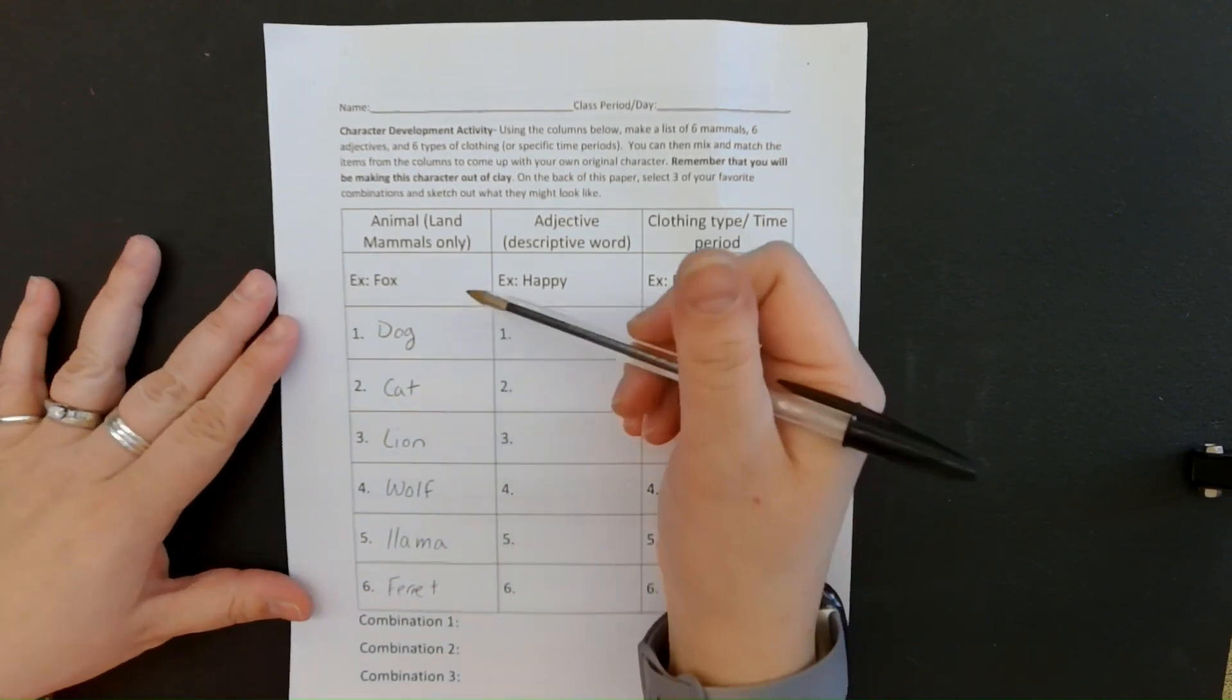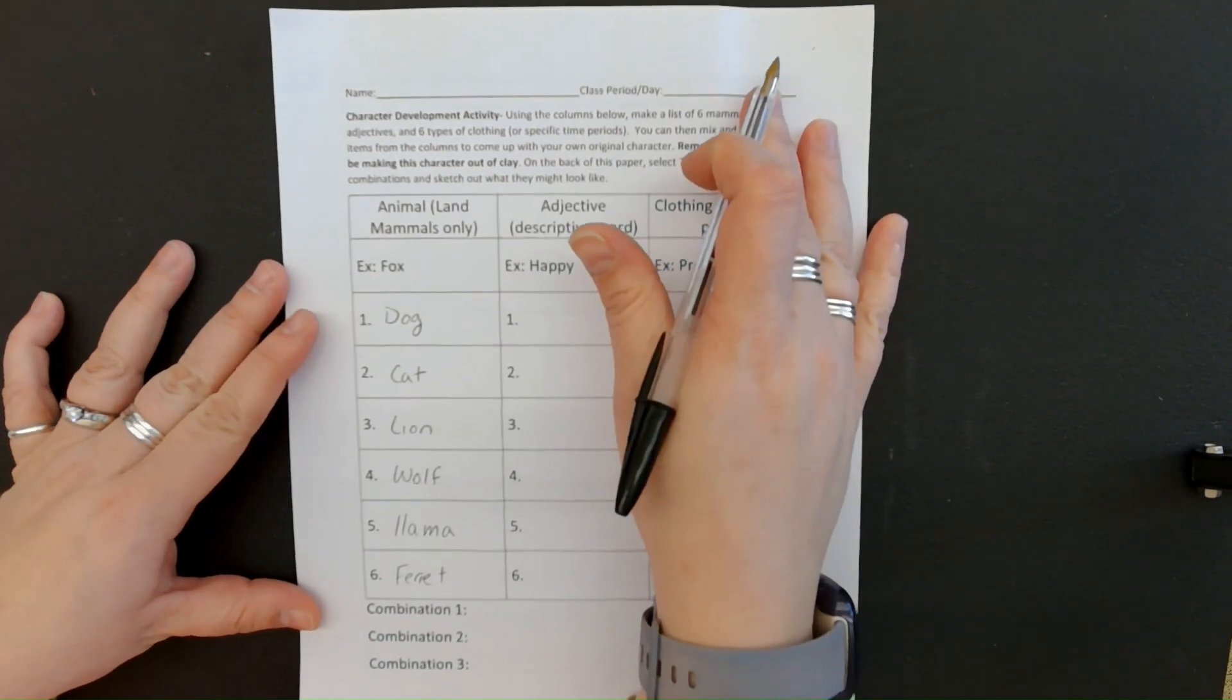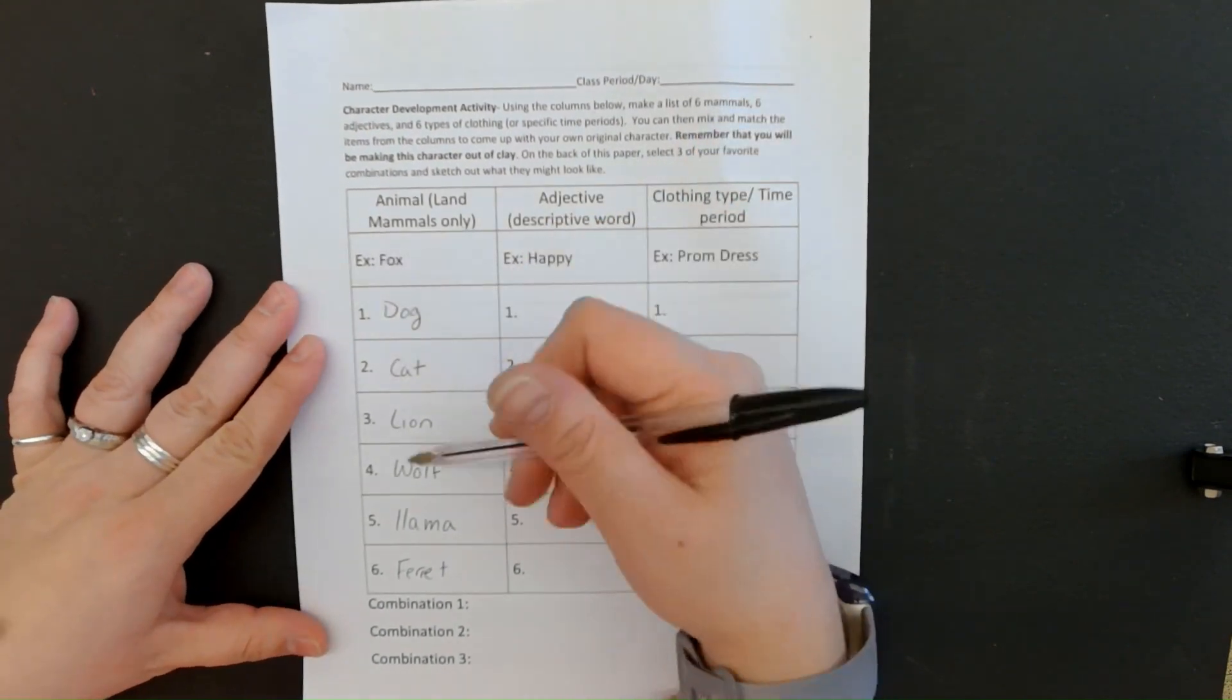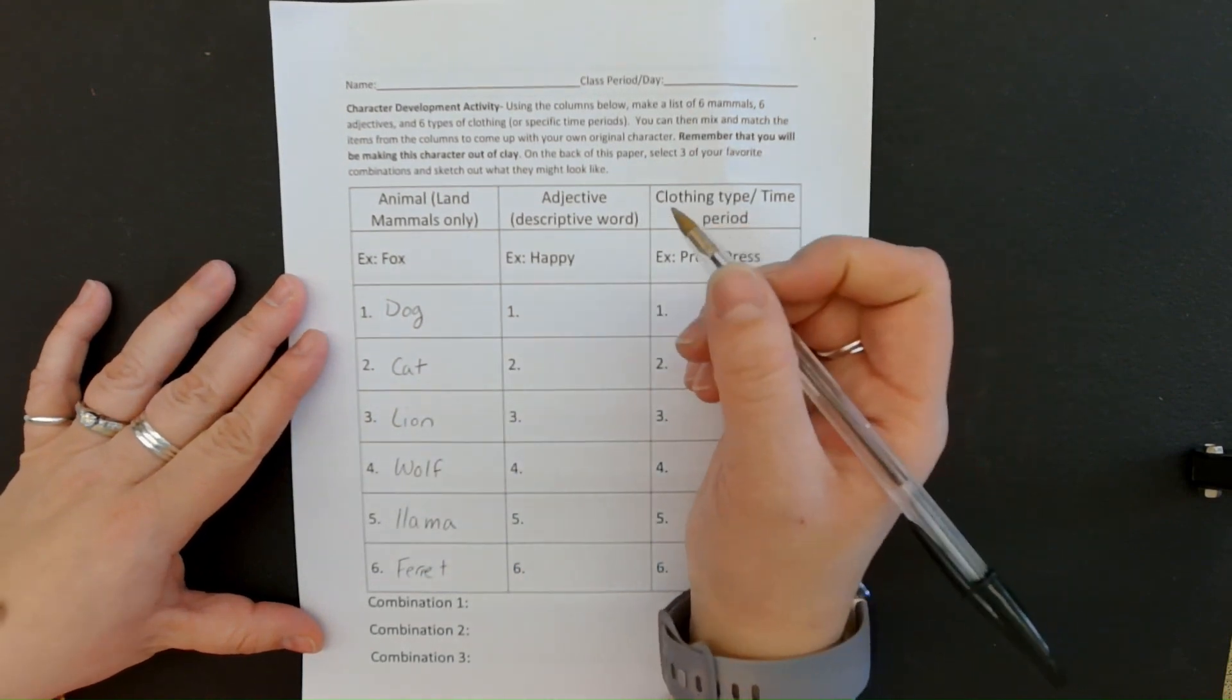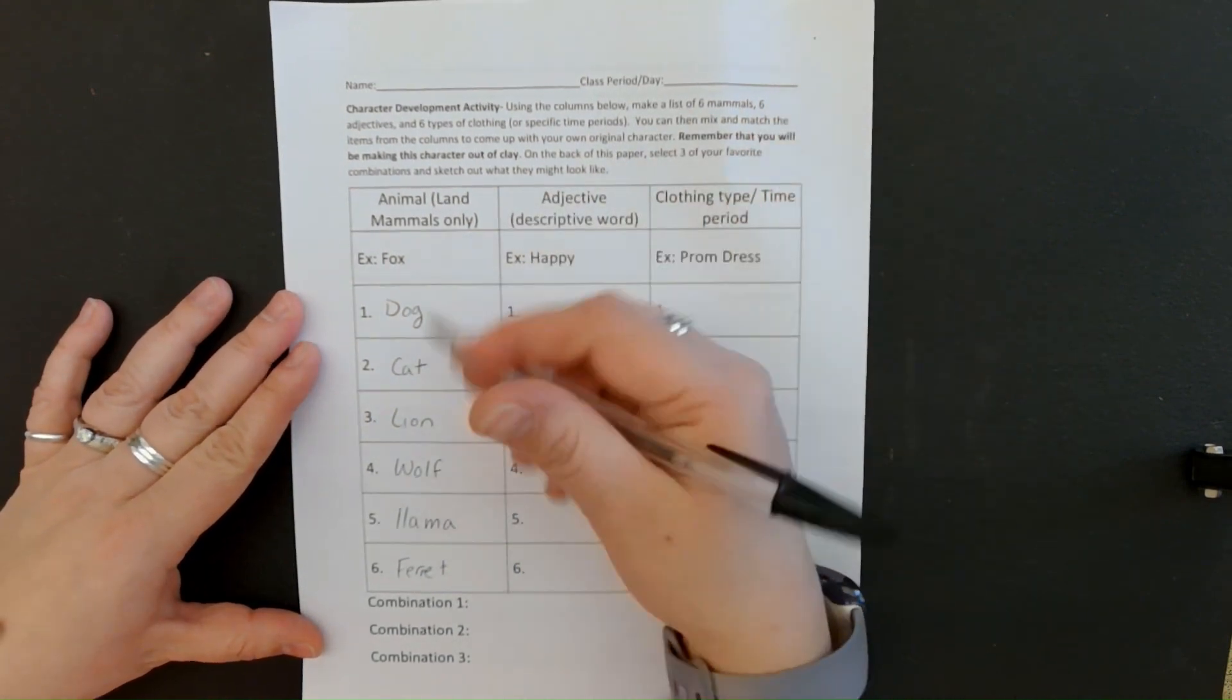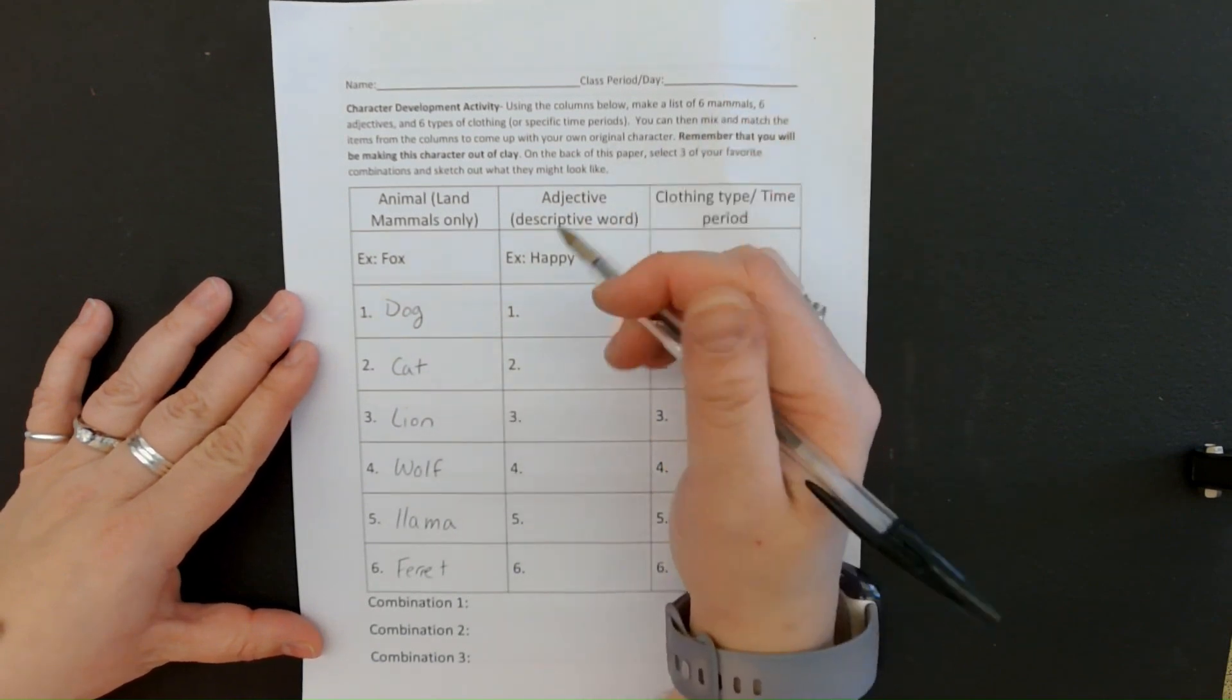Try to pick more interesting animals. I'm doing these just because they're kind of easy to think of. You can go online to find a mammal generator, a random mammal generator, and it'll give you a ton of examples of different mammals.